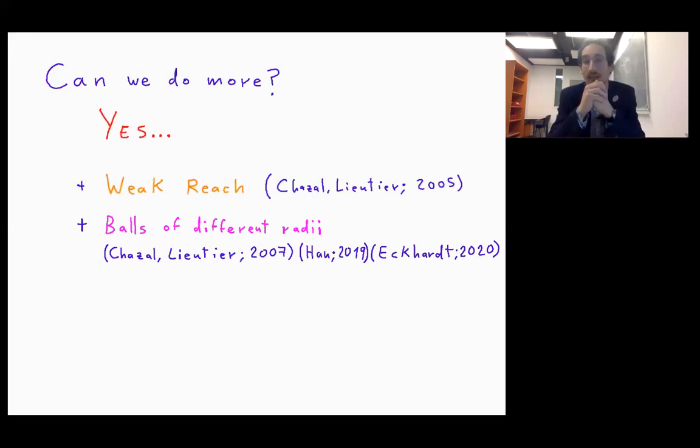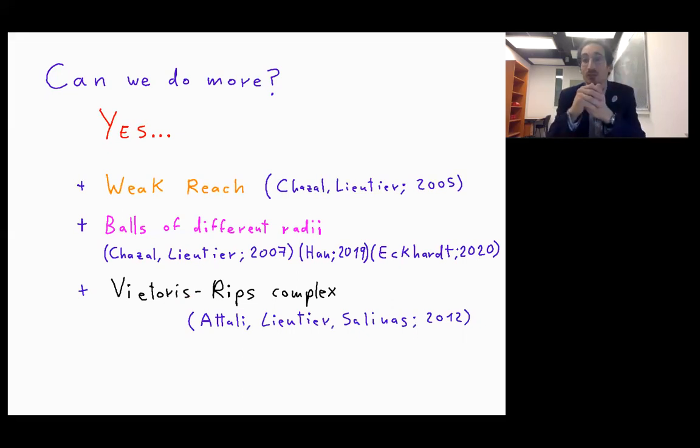Then we have the case in which we consider fattenings of different radii. So I don't fatten all the points in S the same way. Then I have one in which I use the Vietoris-Rips complex, which is easier to handle computationally than the Čech complex that I will handle with the union of balls.